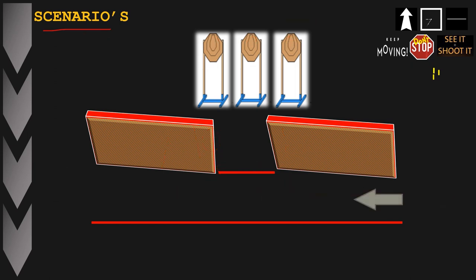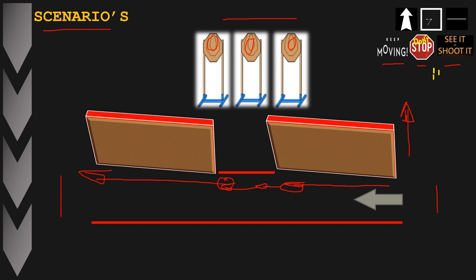This is a similar scenario but now we are coming from the right hand side and moving to the left. The downrange area remains in the direction of the three targets. Using the same principles — keep moving, don't stop, see it shoot it — continue moving whilst regulating speed. As soon as you see the target on the left, engage it; continue to move and engage the middle target; then engage the target on the right. As soon as it is engaged, use the drop step technique to launch to the left.